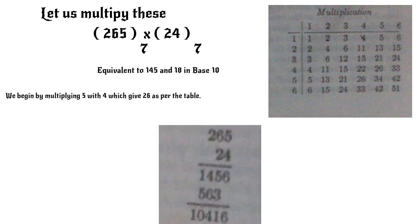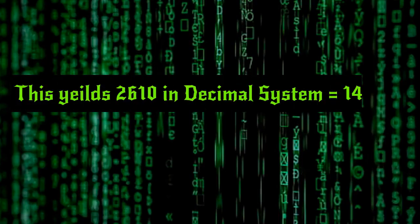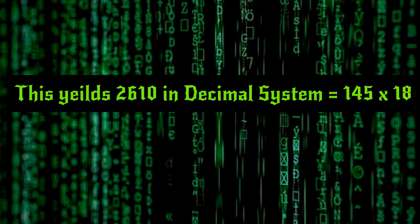Just following the normal rules of multiplication, we begin with multiplying 5 with 4 which is 26 as per the multiplication table. We write 6 in the unit place carrying the 2 in the next place. In this fashion we multiply all the values and get a multiplied value of 10416. This, when converted to decimal system, yields 2610 which is equal to 145 into 18. Thus, these two conversions are equivalent in nature.